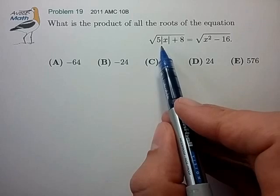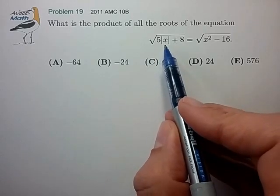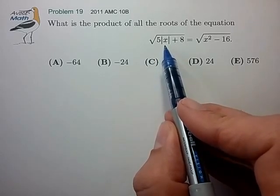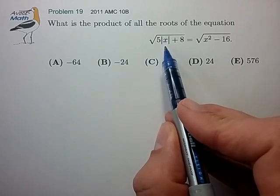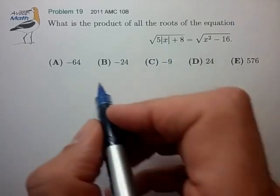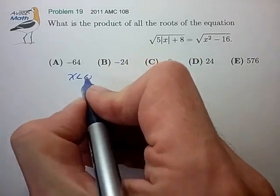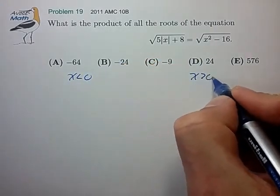Now we have just one set of absolute value signs around the x variable, so it looks like we'll have to consider at least two cases, and probably only two cases. So we'll have to consider the case where x is less than 0, and x is greater than 0.